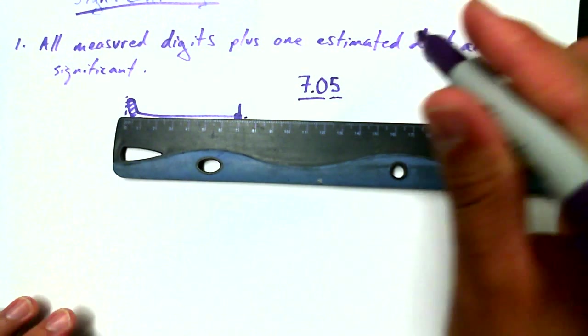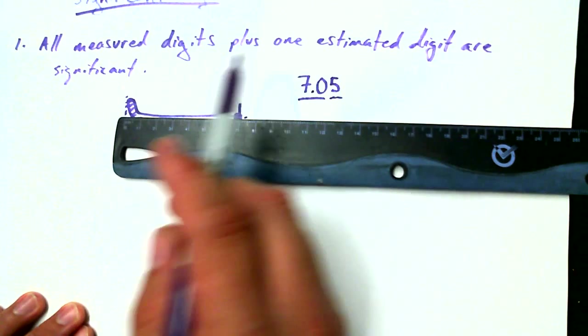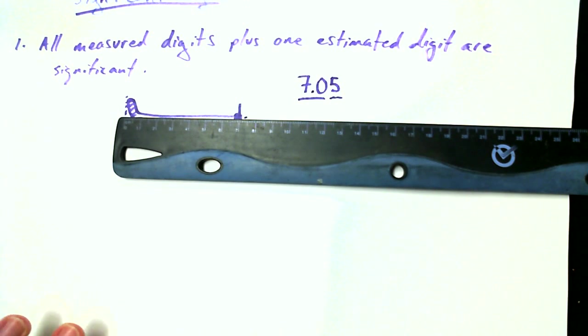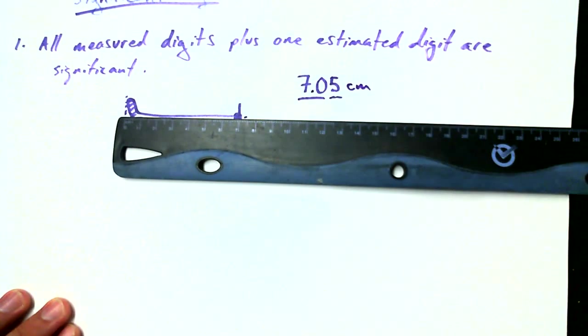It's not quite 7.1, but it's definitely 7. So what I can be certain of is that it's at least 7.0, and then I can estimate an extra digit. So 7.05 centimeters. And that's what it means to say all measured digits plus one estimated digit, the five is estimated, are significant. So if I wanted to say with confidence that as far as I can see with my naked eye, this drawing of a hockey stick is 7.05 centimeters, that could be a valid statement.